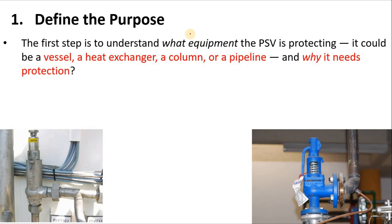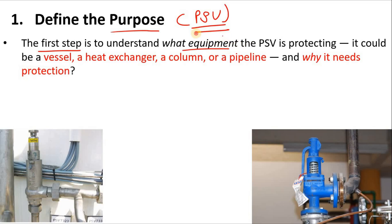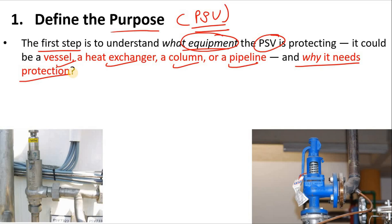First we prepare the narrative. The first thing we describe in the narrative is the purpose of the PSV — why you are using it. Check where that PSV is located: whether it is protecting a vessel, heat exchanger, column, or pipeline. Then understand why that system needs the PSV — it could be a code requirement, a design feature, or a system requirement.